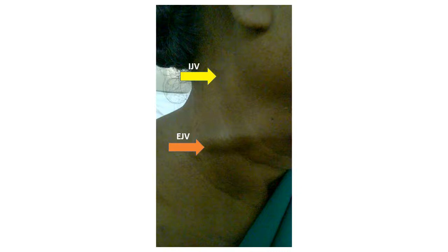This video shows the difference between the external jugular vein pulsation and internal jugular vein pulsation. Quite often it is confused because the pulsations do overlap sometimes, and students often mistake the external jugular vein for the internal jugular vein.